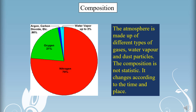Water vapour: the gaseous form of water present in the atmosphere is called water vapour. Its presence in the atmosphere has made life possible on the earth. It is the source of all kinds of precipitation. Its maximum amount in the atmosphere could be up to 4%, and maximum amount of water vapour is found in hot wet regions, while its least amount is found in dry regions. Generally, the amount of water vapour goes on decreasing from low latitudes to high latitudes, and in the same way its amount goes on decreasing with increasing altitude.